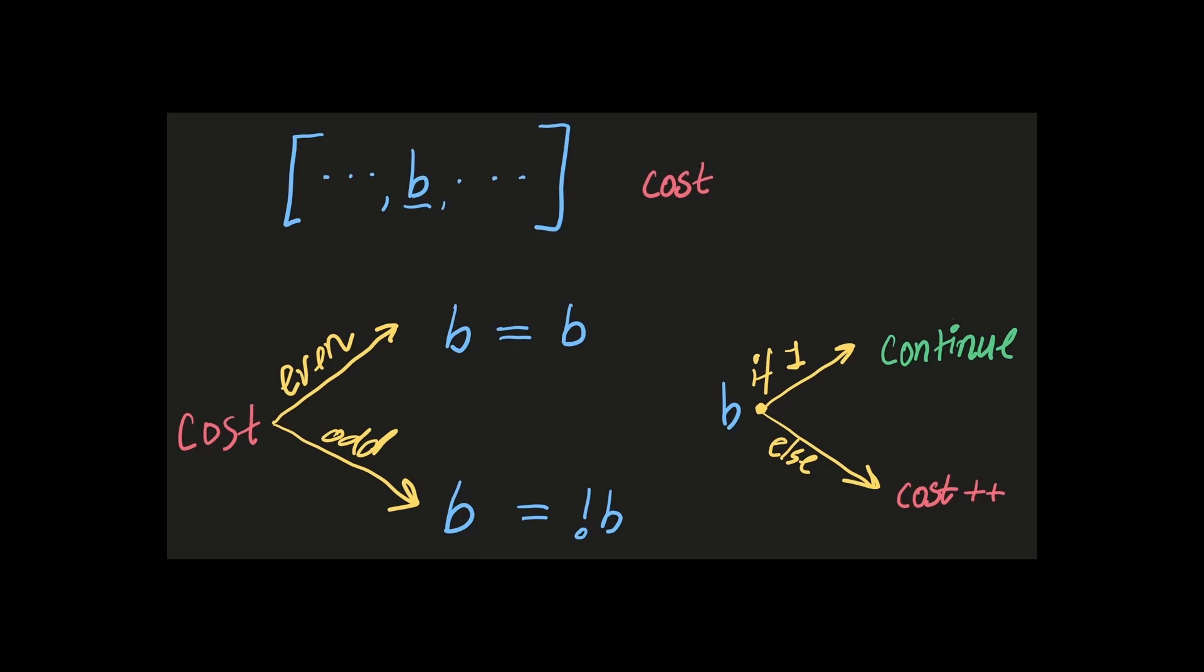Now, then what? Well, if we can figure out this part, well, we can just write down what we did before. If the current bit we are looking at is one now, we'll just continue. Else, we'll increase the cost by one. Alright, let's try to code this up.